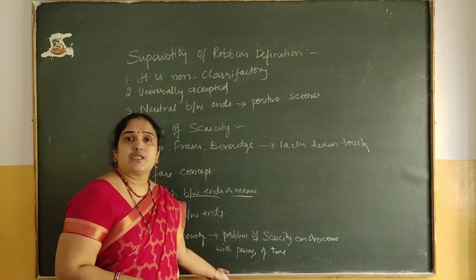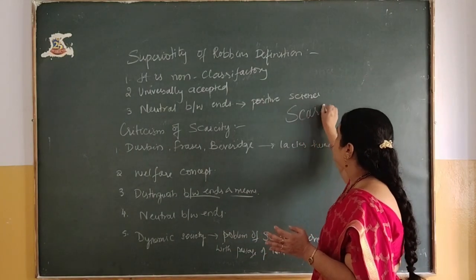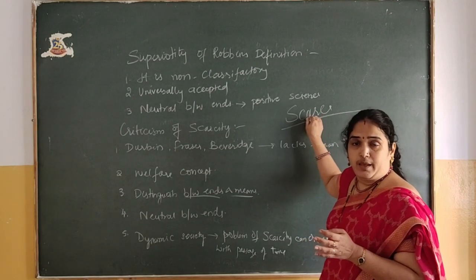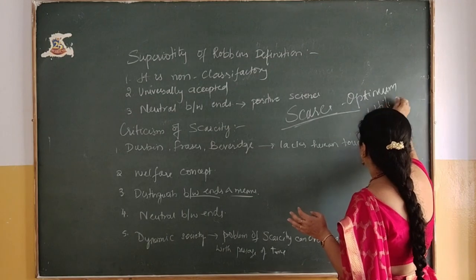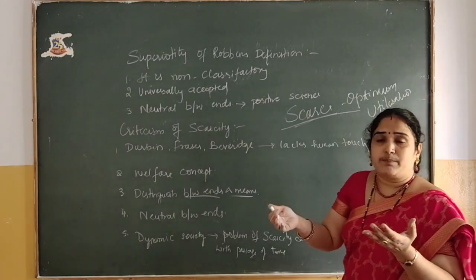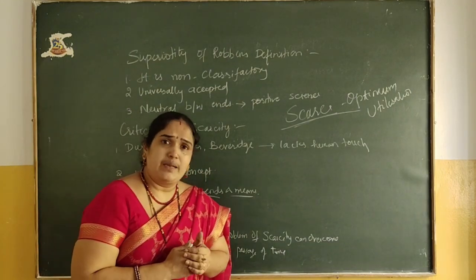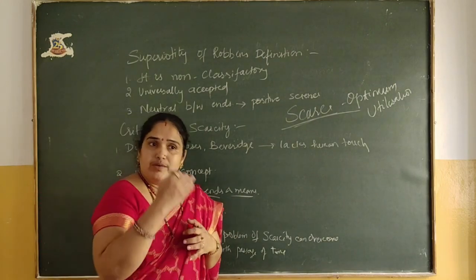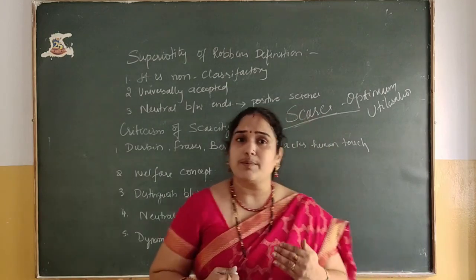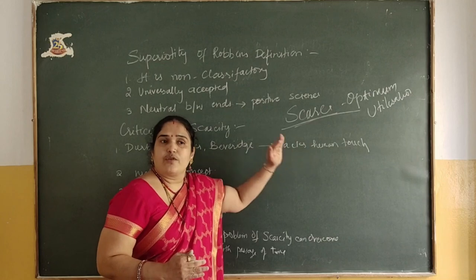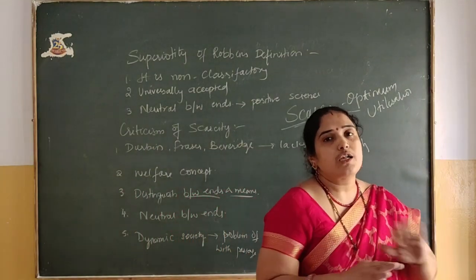Another criticism was given by Mrs. Joan Robinson, who strictly criticized saying that yes, we know resources are scarce, but we can put these scarce resources to optimum utilization. Whatever resources we have, we must think about how best to utilize them to satisfy our unlimited wants. We cannot always keep saying resources are scarce — we have to think about how best to utilize available scarce resources. Even the scarcity definition given by Lionel Robbins was thus criticized.